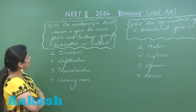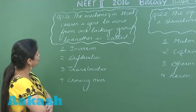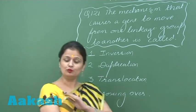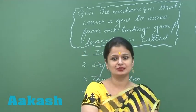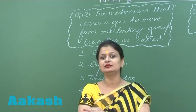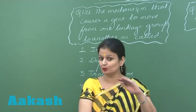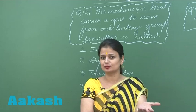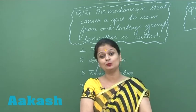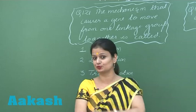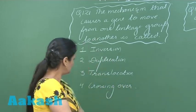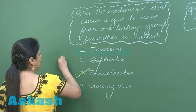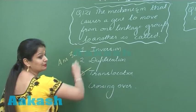In question 121, the mechanism that causes a gene to move from one linkage group to another involves movement of genes between non-homologous chromosomes. When it is between homologous chromosomes, you call it crossing over. But here we are talking about non-homologous chromosomes, so this is not crossing over. This mechanism is translocation. So the right option for this question is option number 3.